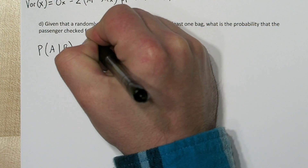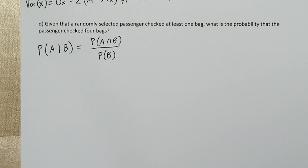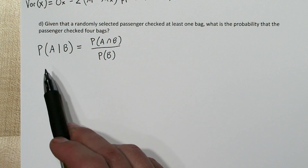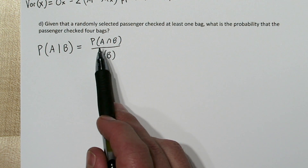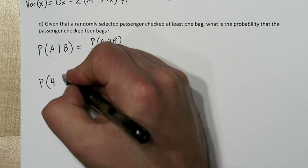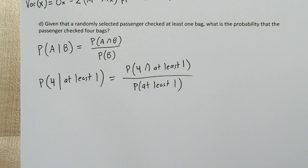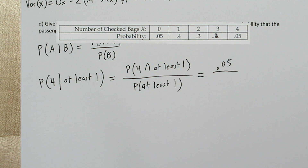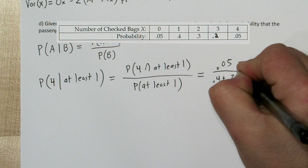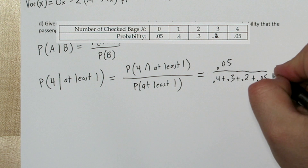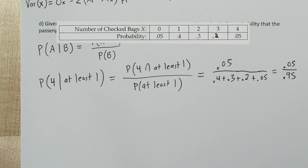If we're given that a passenger checked at least one bag, to determine the probability that they checked 4 bags, we can use the conditional probability formula, which is also given on the AP Stats formula sheet. The probability of A given event B equals the probability of A and B divided by the probability of B. So the probability a passenger checks 4 bags given they've checked at least 1 equals the probability they checked 4 bags and at least 1, divided by the probability they checked at least 1. If they've checked 4 bags, they've automatically checked at least 1, so the numerator is just 0.05. The denominator is 0.4 + 0.3 + 0.2 + 0.05. So the probability is about 0.0526.